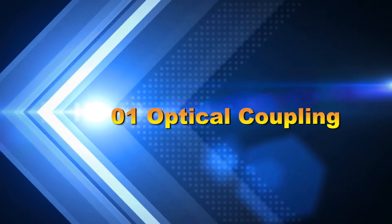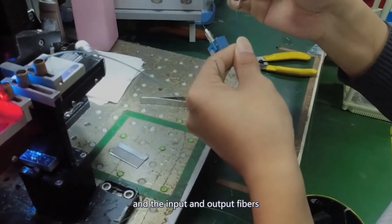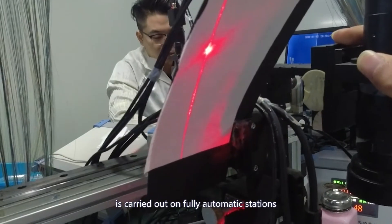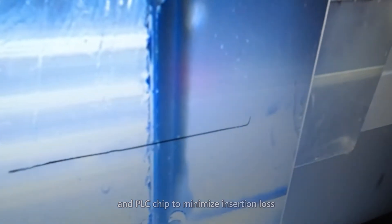Part 1: Optical coupling. The positioning of PLC chip and input-output fibers is carried out on fully automatic stations. Adjust the angle between fiber ring and PLC chip to minimize the insertion loss.